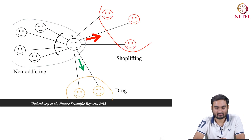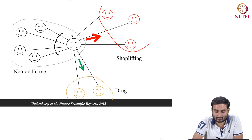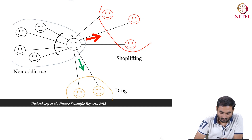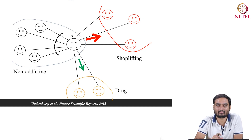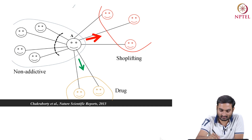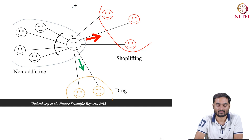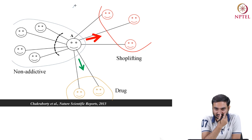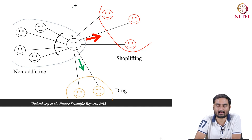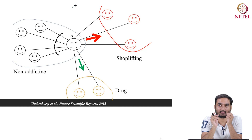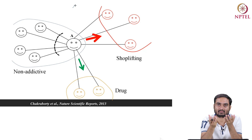Let us look at the formulation of permanence. I will discuss it using two stylized cartoon examples. Permanence is built on two heuristics. Remember, permanence is again a metric defined to quantify the quality of a community structure — we assume we already know the community structure and check whether the quality is better or not.